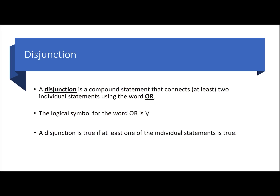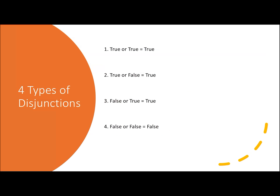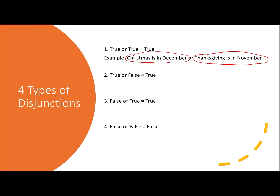A disjunction is a compound statement that connects two statements using the word 'or.' The logical symbol for 'or' is a V. A disjunction is true if at least one of the individual statements is true. For example: 'Christmas is in December or Thanksgiving is in November' — true or true — makes the entire statement true. Also, 'Christmas is in December or Thanksgiving is in July' — true or false — is still true.